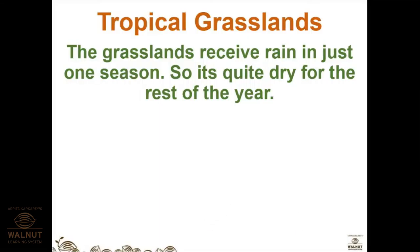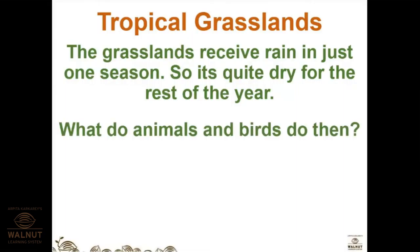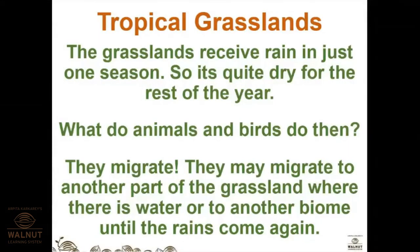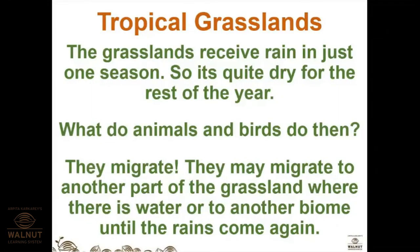The grasslands receive rain in just one season, so it is quite dry for the rest of the year. When the season is dry, animals and birds migrate — they move to another part of the grassland where there is water, or to another biome entirely, until the rains come again. If water is not available in the grasslands they move to another biome.